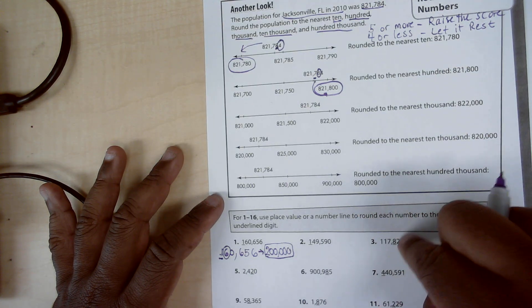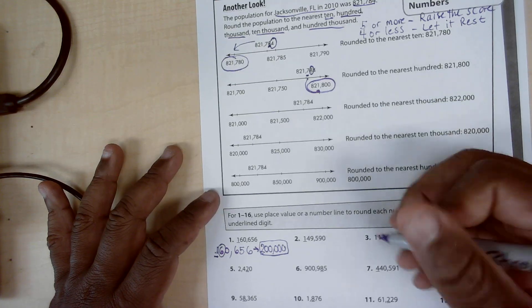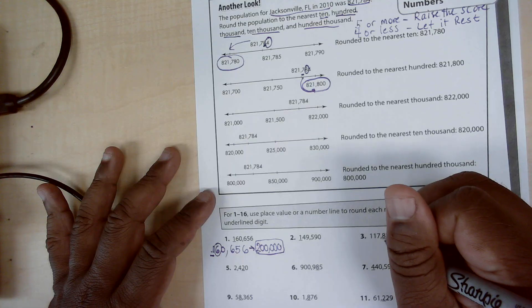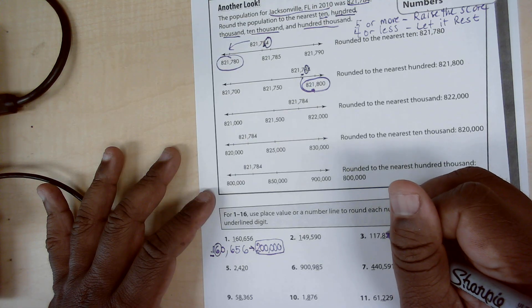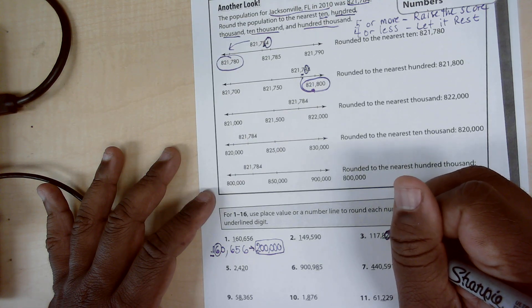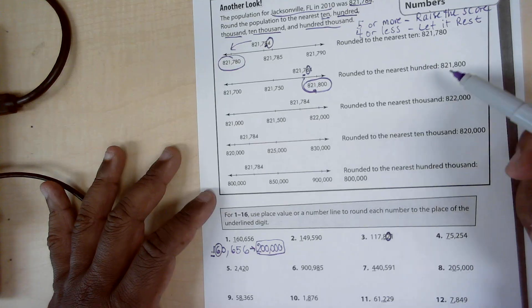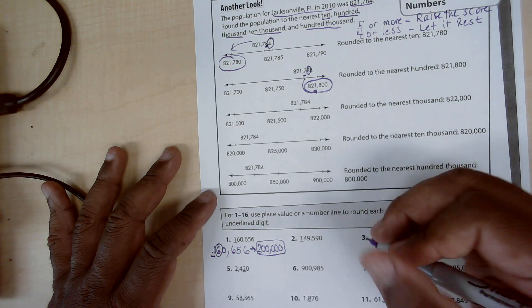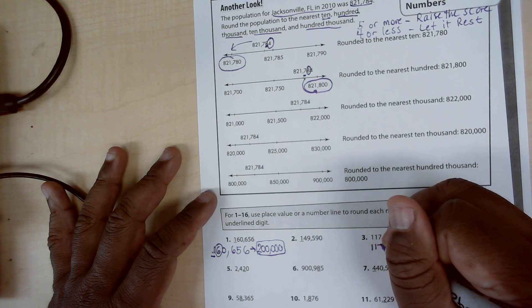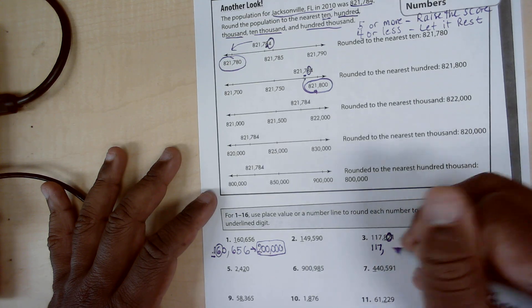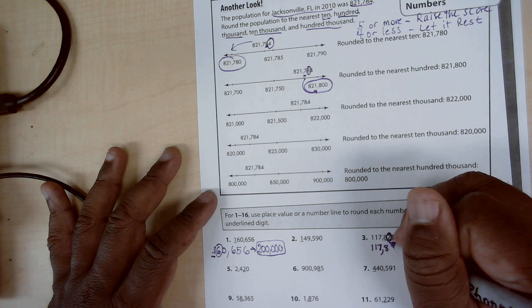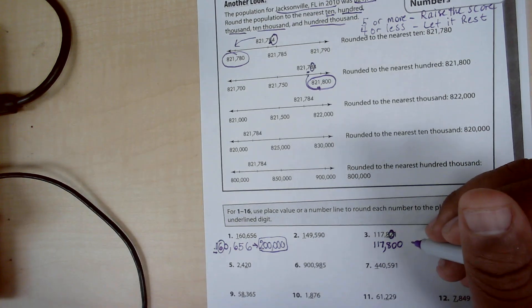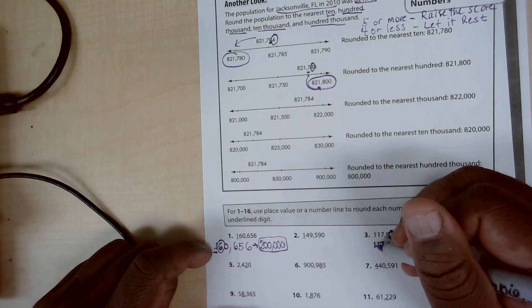Let's go to number three. I notice that the eight in the eight hundreds is underlined, so I'm rounding to the nearest hundred. So I circled the tens and I notice it's a two. So two would be four or less, let it rest. So all the digits before the eight stay the same, the eight will stay the same because you let it rest, and these digits after become zeros.